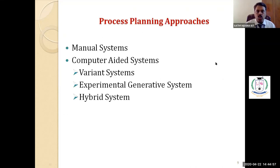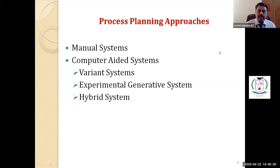Next, process planning approaches. There are two approaches: one is manual approaches — called manual systems — and the second is computer-aided systems. Computer-aided systems can be further classified into three subsystems: variant systems (also called retrieval systems), generative systems, and hybrid systems. We will see each one with respect to practical application and industry point of view.